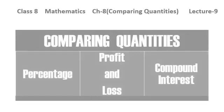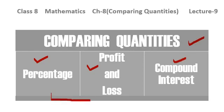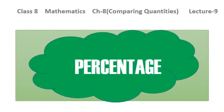Comparing quantities basically consists of three concepts: percentage, profit and loss, and compound interest. These three are the subtopics of this comparing quantities chapter. In this lecture we are going to discuss the first two parts — percentage and profit and loss — and then later on we will be discussing the compound interest part. Let us come to the percentage part first.